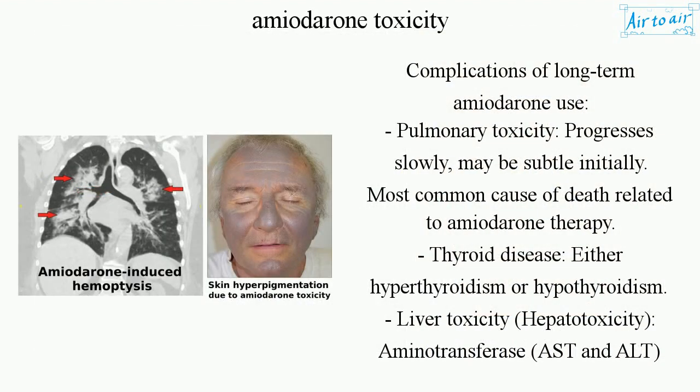Complications of long-term amiodarone use: Pulmonary toxicity progresses slowly, there may be subtle initially. It is the most common cause of death related to amiodarone therapy.